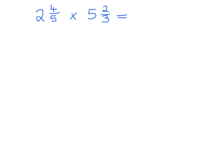So try this question yourself: 2 and four-fifths multiply it by 5 and two-thirds. And see how you get on. So doing the same as before, rewrite this number as a fraction, and rewrite this number as a fraction. So what did you get? Did you get 14 over 5 and 17 over 3?